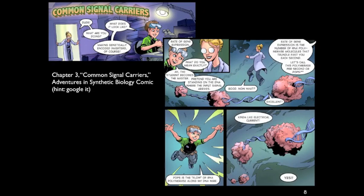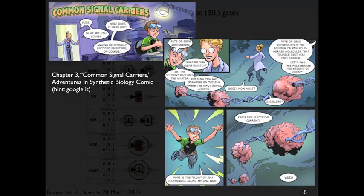If the signal carrier stuff is totally alien to you, please go check out a comic book called Adventures in Synthetic Biology. You can find it as a free download on the web and read chapter three called Common Signal Carriers. This is going to introduce you to the idea of transcriptional current, which we call polymerase per second or POPs. The transcriptor logic gates that we're making have a POPs control signal, a POPs input signal, and a POPs output signal.